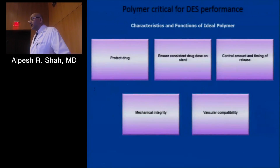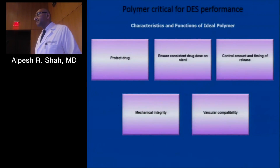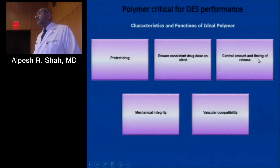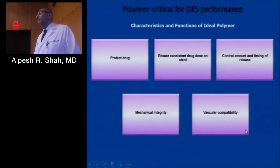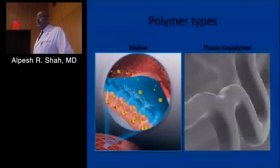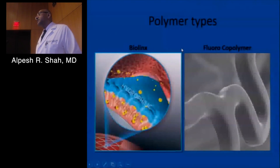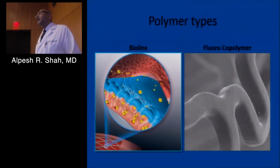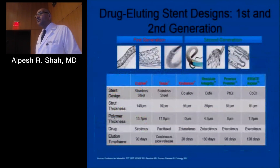The polymer is a very important and hotly debated topic. Polymer is coated on the metal stent and acts as a carrier for the drug molecule — it protects the drug, ensures a consistent dose, and controls the amount and timing of release. The polymer must be mechanically integral and vascularly compatible. There are currently two types used: one is a fluoropolymer (Biolink), for which some data suggests it may be thrombo-resistant. We have moved from first-generation to second-generation stents based on all these advances.